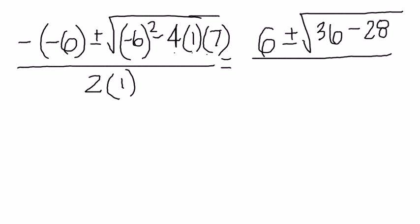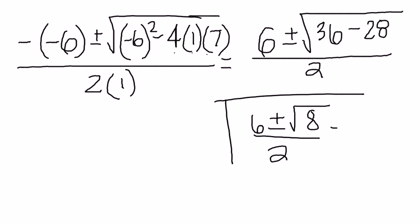All divided by 2 times 1 is 2. This can get simplified further into 6 plus or minus the square root of 8 divided by 2. That is your x value.